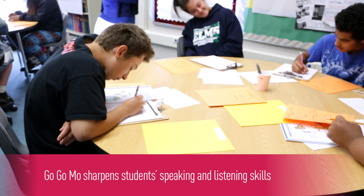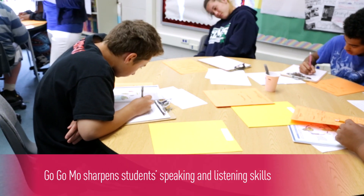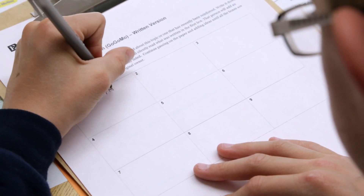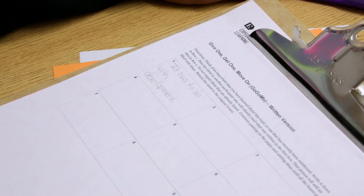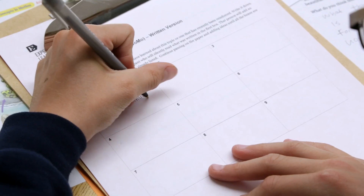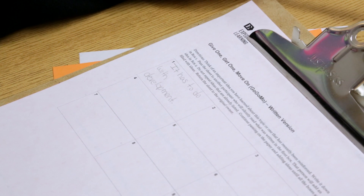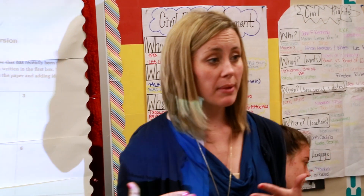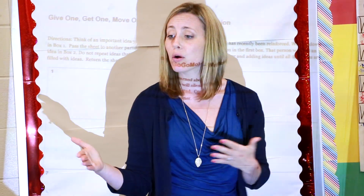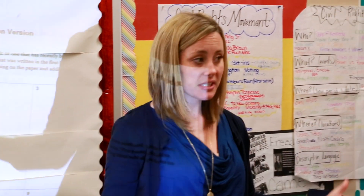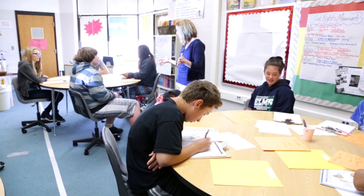I'm going to ask you to write one new piece of evidence you have learned about metamorphosis. Students start GoGoMo by writing down one piece of evidence that they have learned or reviewed during that class period. We're going to pass our clipboards in just a moment around the table until they are completely filled with information all about the topic of metamorphosis.